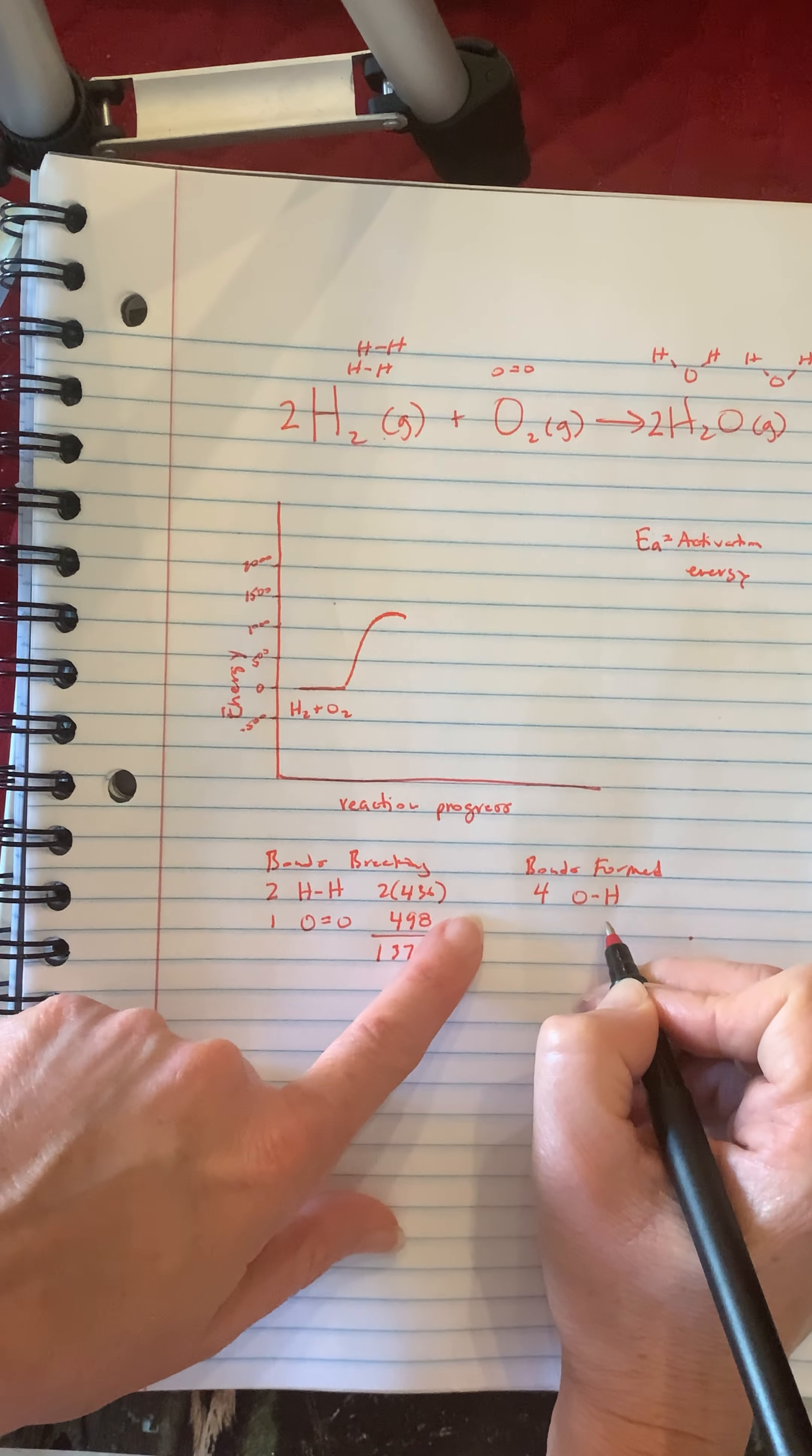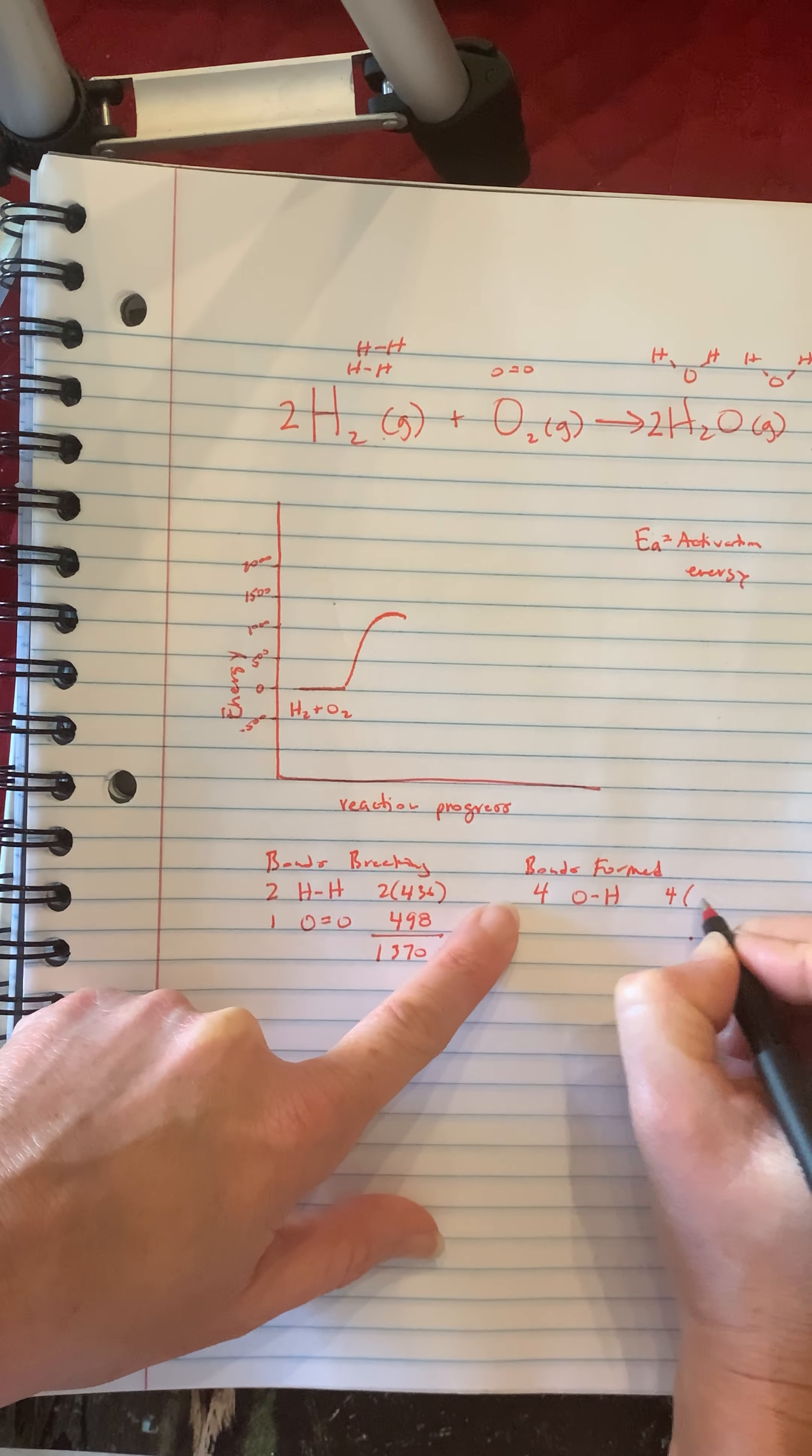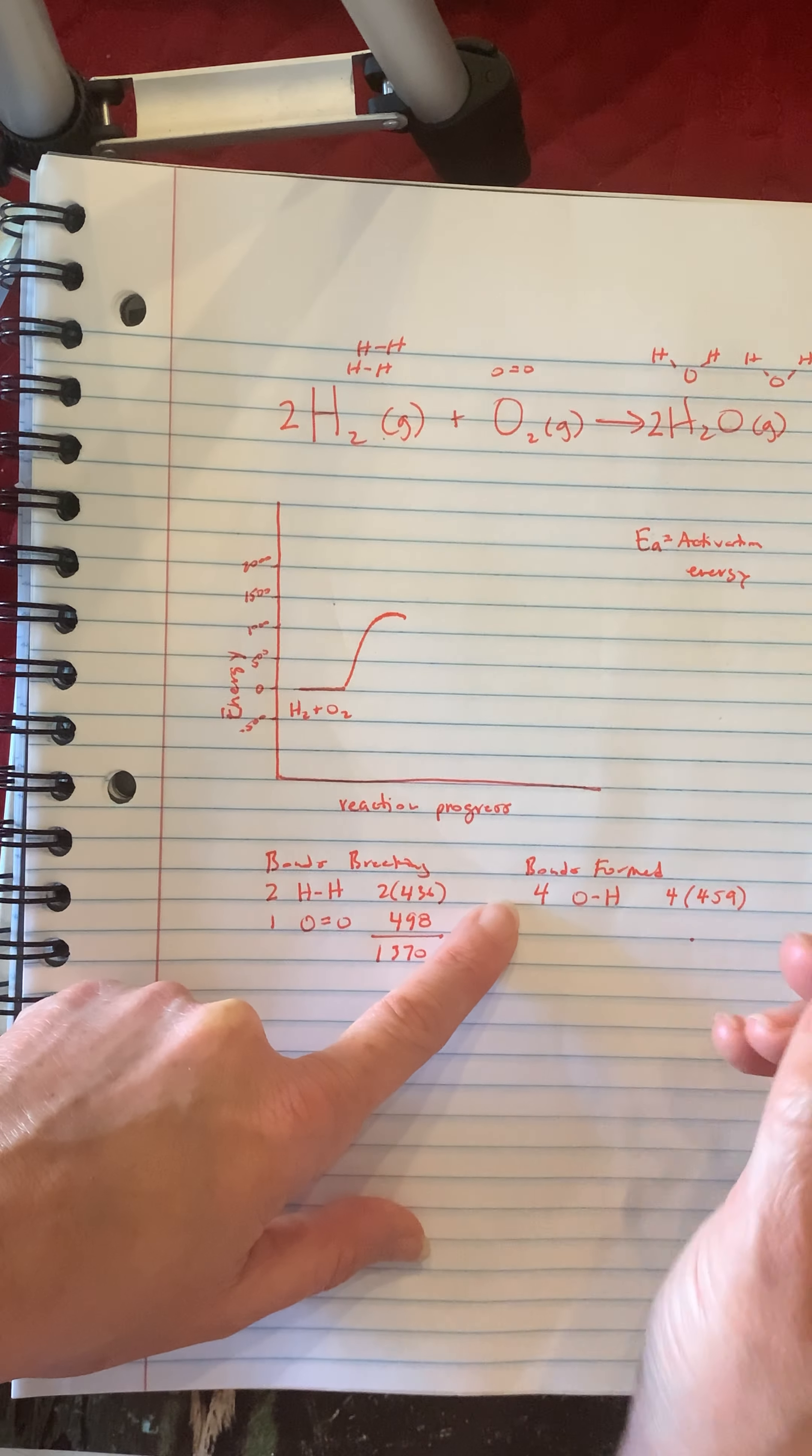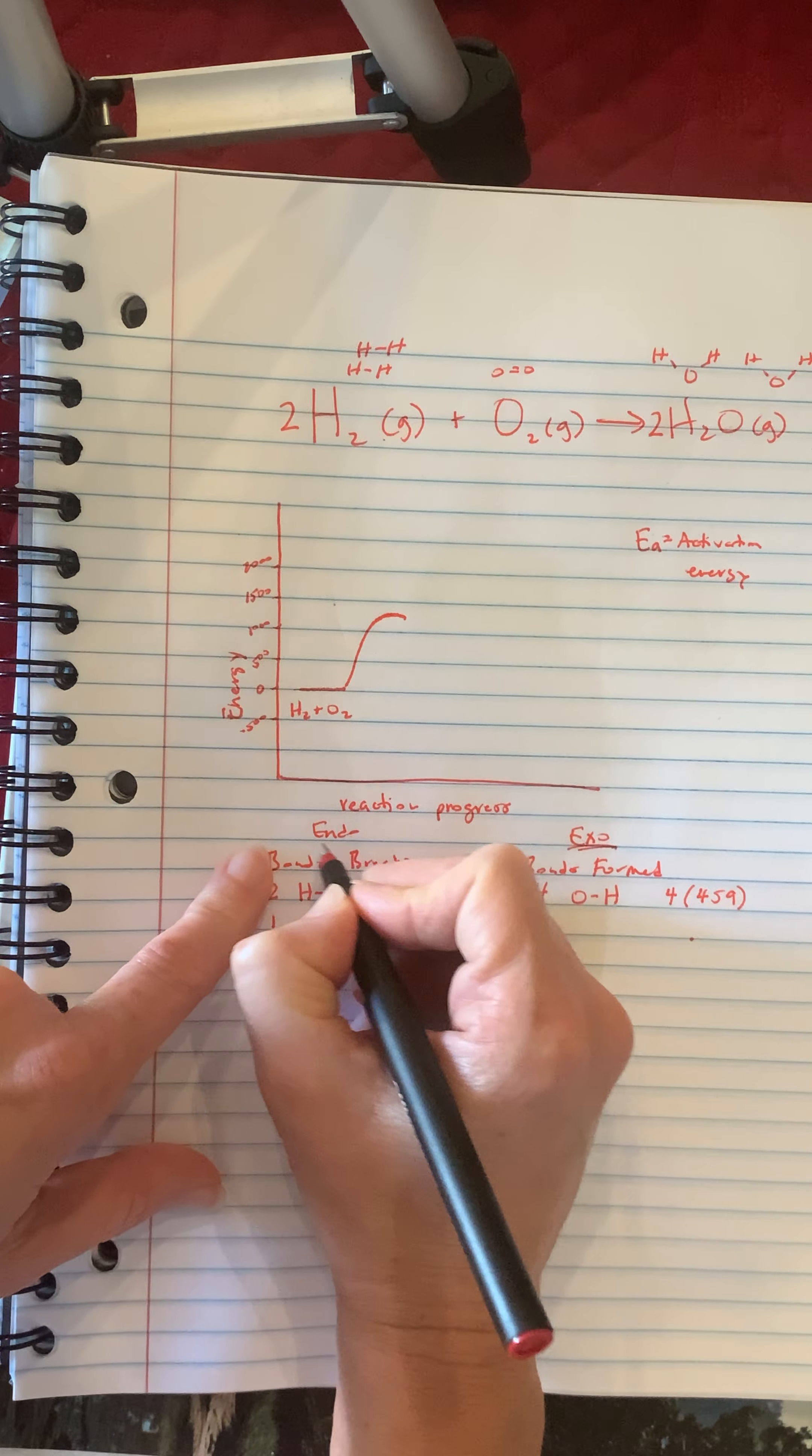Where are we going to end? Well how much do we get back out? The oxygen to hydrogen is 459 kilojoules that we will get out. So every time we form one of these OH bonds we get this much energy given off because this side is exo and this side is endo. This is heat going in, this is heat coming out.